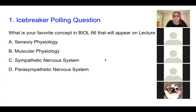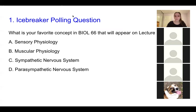My question for you all is: what has been your favorite concept so far in BIO66 that's going to appear on the Lecture 2 exam? I'm going to go ahead and open up the polling question. All of you have voted, so we're going to end the poll. About half of you said sensory and muscular physiology. Sensory physiology is definitely one of my favorites too. If you're interested in learning more, I recommend taking Biology 129 Neuroscience — it's like all sensory physiology.